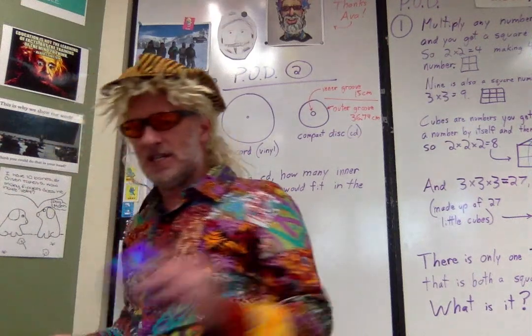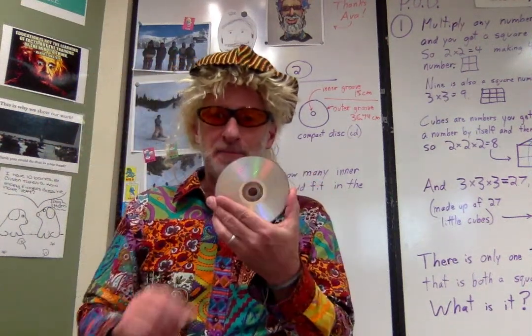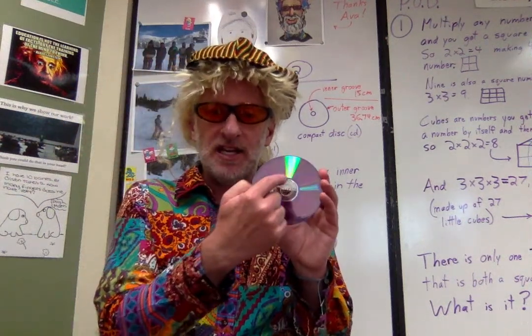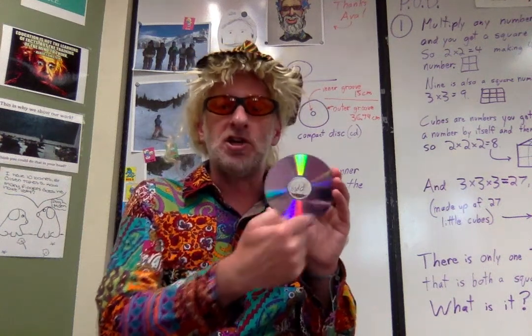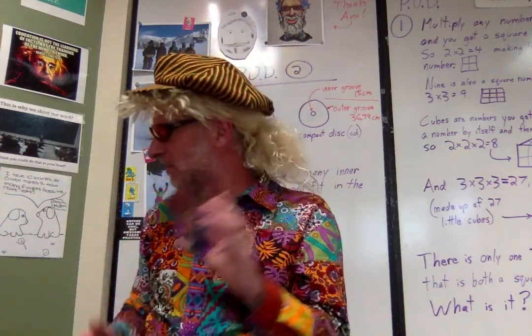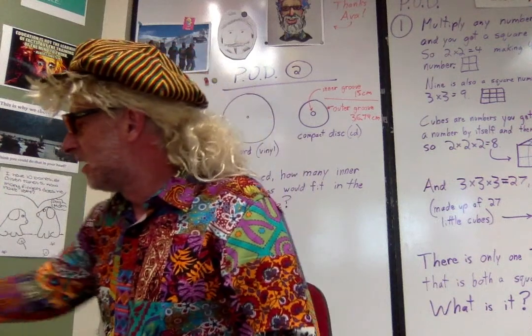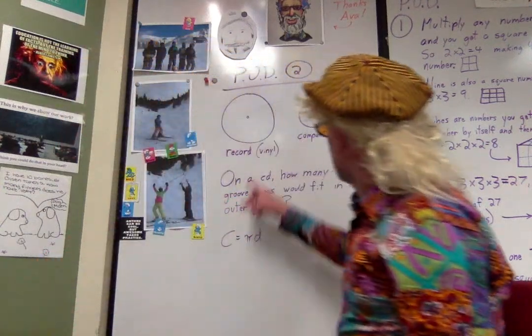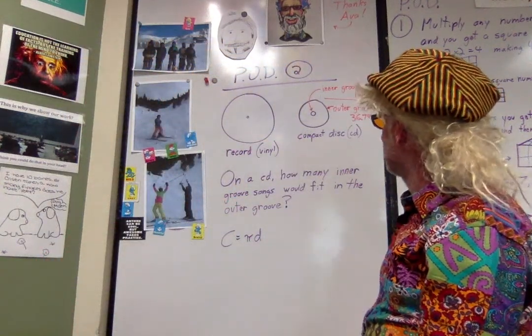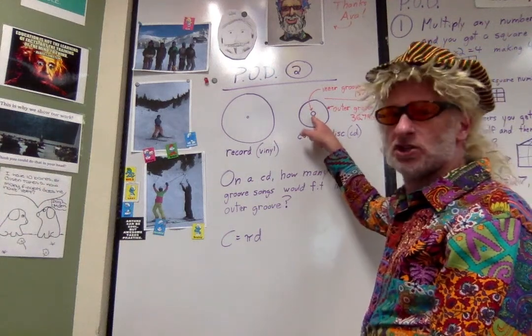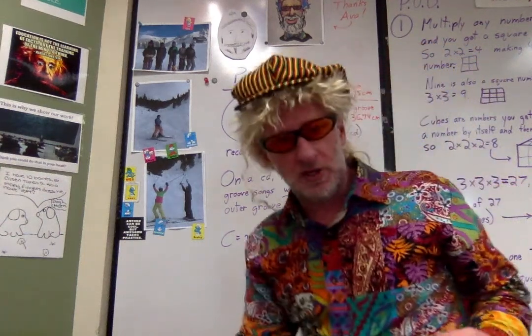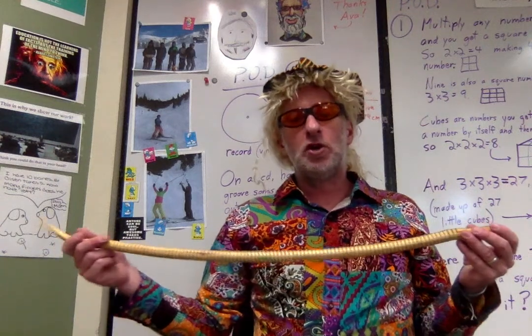So as that record's playing, the needle slowly starts moving its way in. That's how a record works. CDs on the other hand are kind of the opposite everybody, they start on the inside and they spiral outward.